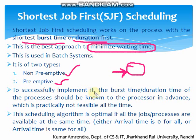To successfully implement SJF, the burst time should be known in advance. For example, if at time zero there are five processes, you can know their burst times. But if at time zero we start CPU scheduling with three processes, and after three or five seconds the remaining two processes arrive, we do not know the burst time of those two processes coming at time five. So it is practically impossible, and this makes the burst time requirement not always feasible.